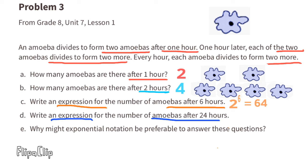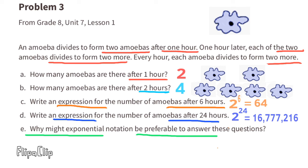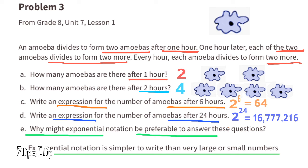Part D: write an expression for the number of amoebas after 24 hours. Continuing the pattern, the expression is 2 to the power of 24, which equals 16,777,216. Part E: why might exponential notation be preferable? Exponential notation is much simpler to write than very large or very small numbers — numbers that have many place values.